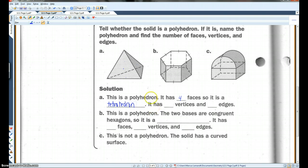It has one, two, three, four vertices. And it has one, two, three, four, five, six edges.